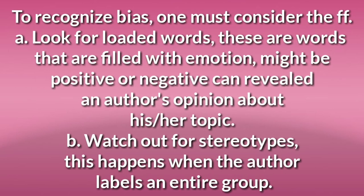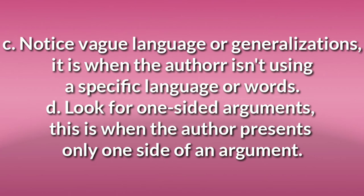To recognize bias, one must consider the following. A. Look for loaded words — these are words that are filled with emotions, might be positive or negative, and can reveal an author's opinion about his or her topic. B. Watch out for stereotypes — these happen when the author labels an entire group. C. Notice vague language or generalizations — when the author isn't using specific language or words. D. Look for one-sided arguments — when the author presents only one side of an argument.